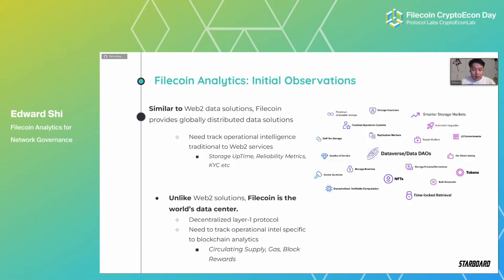What I just talked about establishes that network analytics is important for governance. But how do we proceed — how do we go from first principles into actually building data pipelines and making insights into product? We start from two initial observations specific to Filecoin and derive some systematic strategies from them.